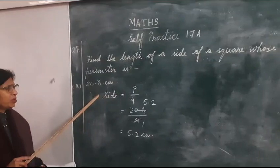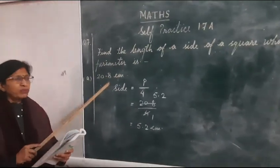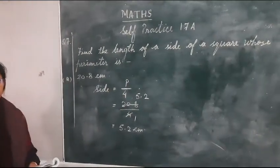In the same way with the same formula, you just find out the side of the square of other parts of this question, b, c and d. That's all for this question.